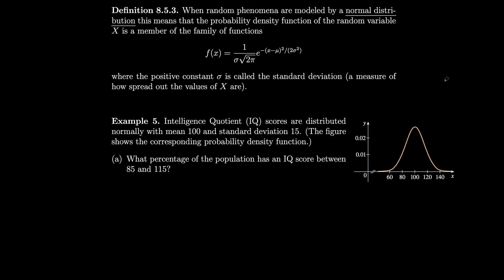When random phenomena are modeled by a normal distribution, the probability density function of the random variable x is f of x equals 1 over (sigma times the square root of 2 pi) times e to the minus (x minus mu) squared over (2 sigma squared). This positive constant sigma is called the standard deviation, and mu is the mean. The standard deviation measures how spread out the values of our continuous random variable x are.